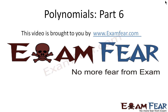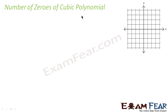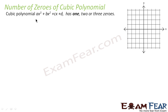Hello friends, this video, Polynomials Part 6, is brought to you by examfear.com. Please make sure that you have watched Polynomials Part 1 to Part 5. Let's discuss cubic polynomials of the form ax³ + bx² + cx + d, which can have one, two, or three zeros. In this slide, we'll see a cubic polynomial that has one zero.